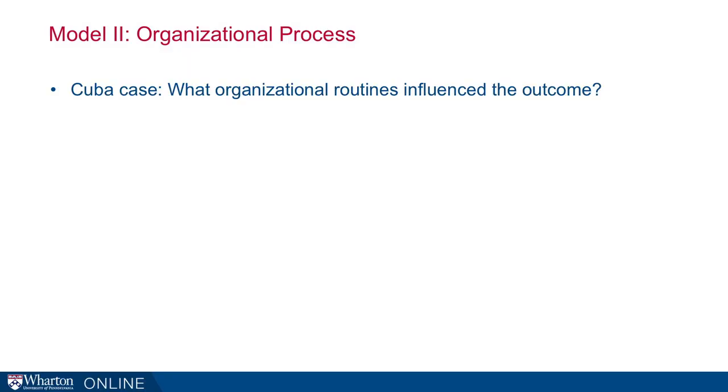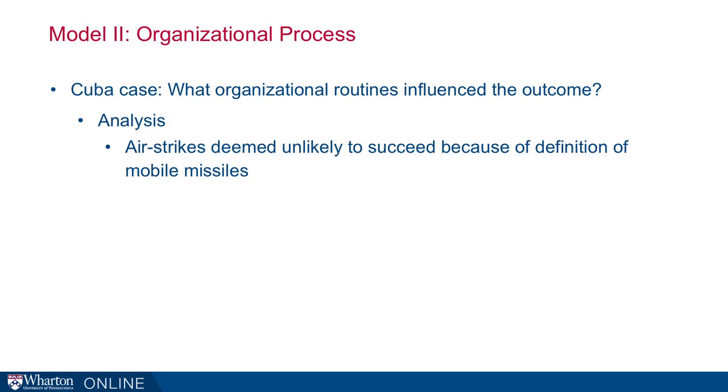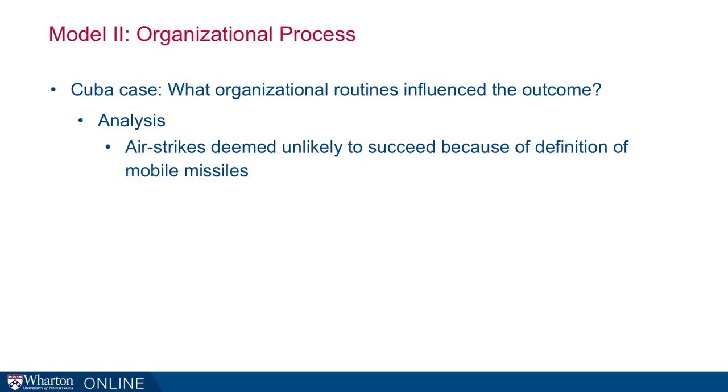Another example: at one point the US classified the missiles as 'mobile,' and that changed how the administration thought they should respond — they assumed the missiles would move if they deployed surgical strikes. But it turned out that was essentially semantics: even though they were called mobile, they weren't mobile enough that strikes wouldn't have worked. Yet this classification affected decision-making at the most critical moment.